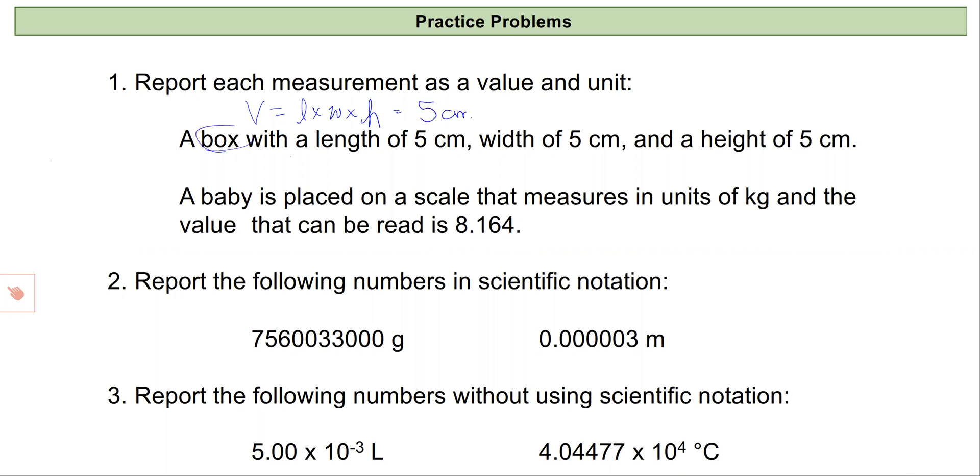Well, five times five is twenty-five, times five is one hundred twenty-five. And then centimeters times centimeters times centimeters would be our units, so that would be centimeters times centimeters times centimeters.